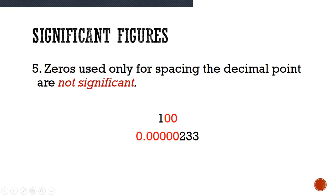All of these numbers are not significant. Why? Because they're just positioning this 233 in its correct location. So none of these are significant. This one would have three significant figures.